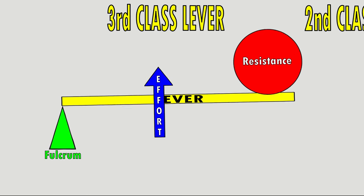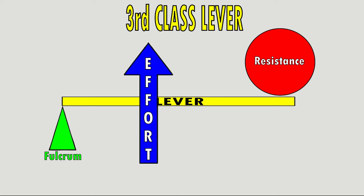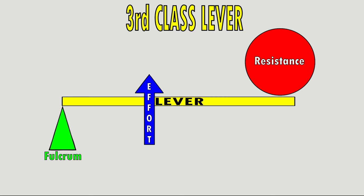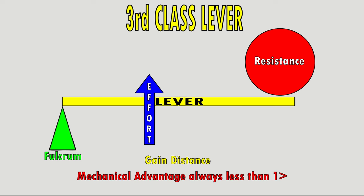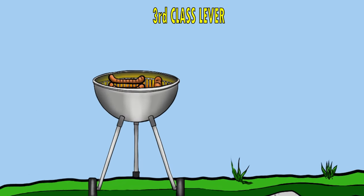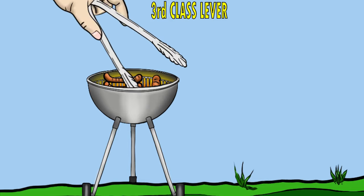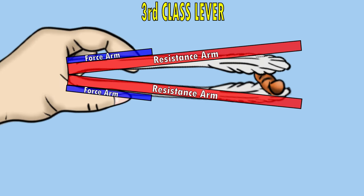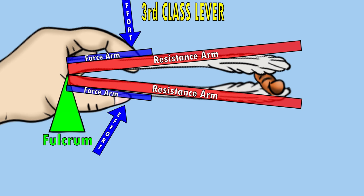The third class lever has the effort located in the middle between the resistance and the fulcrum. Its function is to gain distance, with the mechanical advantage always being less than one. A common real-world example is hot dog tongs: the fulcrum is where the tongs are connected, the effort is applied to the center, and the hot dog is the resistance. The third class lever is the most common lever used in the human body.